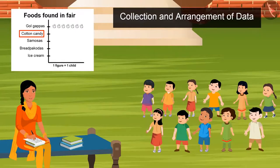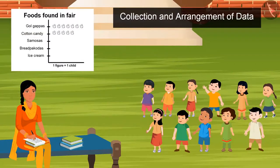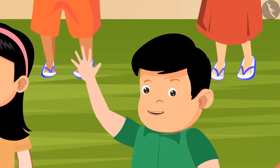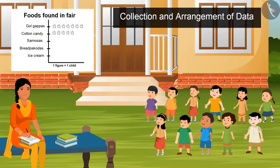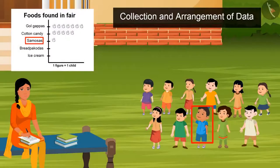Who all wants to eat cotton candy? One, two, three, four, and five. Sister, I have cavities so I can't eat sweet things. Okay, who all wants to eat samosas? One, two, and three.